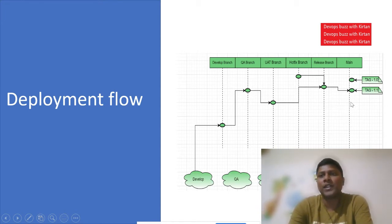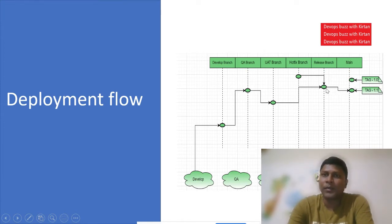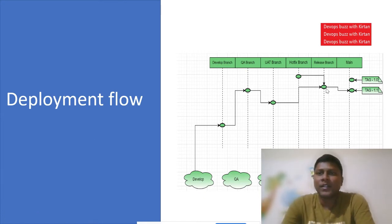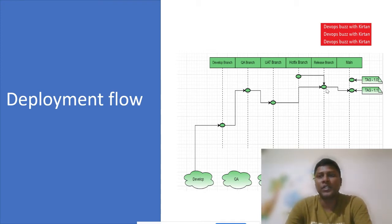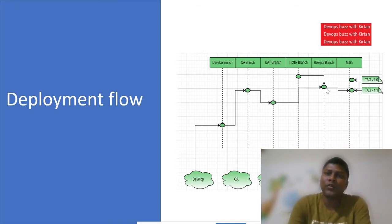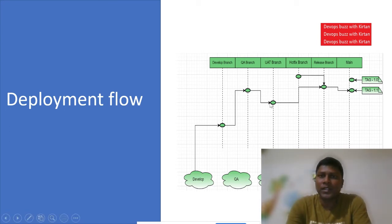Coming from the right side, first we'll have the main branch. Apart from the main branch, we'll have a release branch — I'll discuss why we have a release branch in the upcoming slides. We also have a UAT branch, a QA branch, and a develop branch.